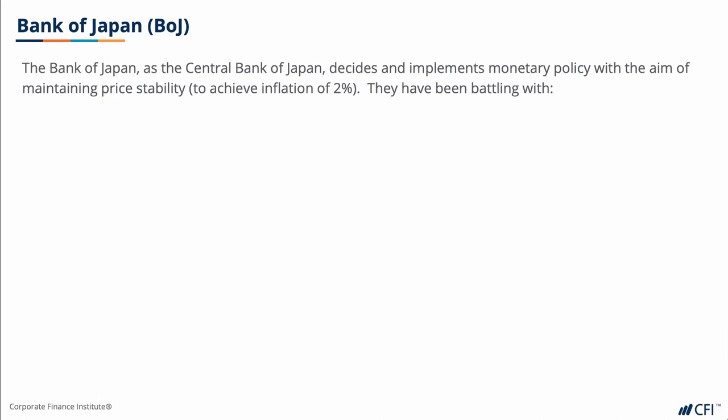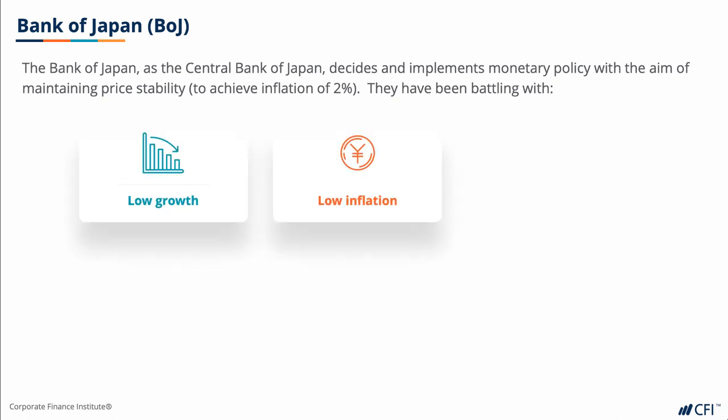However, due to a magnitude of reasons such as demographics, asset bubbles, and overly aggressive bank lending in the 80s, the country has undergone economic stagflation, resulting in what economists have dubbed the lost decade between 1991 and 2000. However, the economic malaise has dragged on into this century, and it's now almost three decades of low growth, low inflation, and increasing bad bank debt.